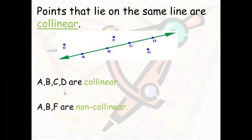So those points we call non-collinear points. 'Non' means no, so not together on the line. Together on the line are A, B, C, D. Not together on the line — for example, E, A, B or F, B, A, or G, C, D. There are many points. Whichever points are not on the line are called non-collinear points.